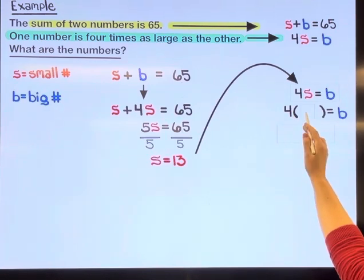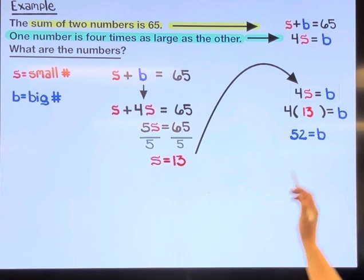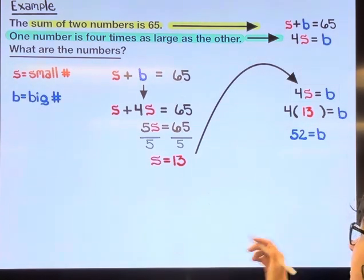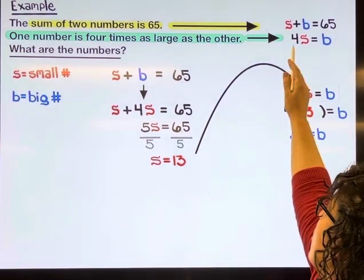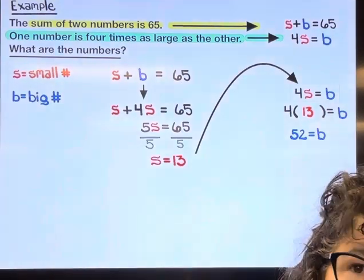So 4 times s, 4 times 13, and 4 multiplied by 13 is 52. We can double check that if we want to go back up to s plus b equals 65, and 13 plus 52 is 65.